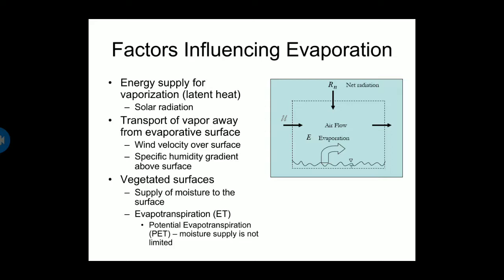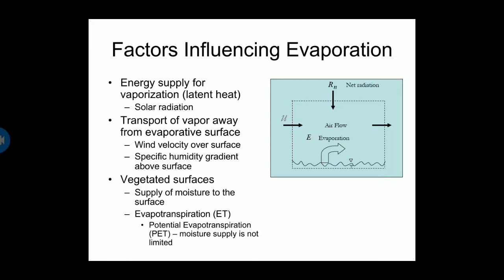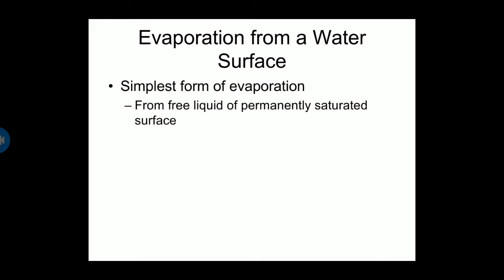Evapotranspiration, called ET, is potential evapotranspiration where moisture supply is not limited. Evaporation from water surface is the simplest form of evaporation from free liquid or permanently saturated surface.